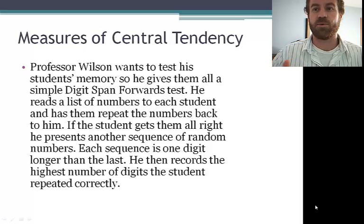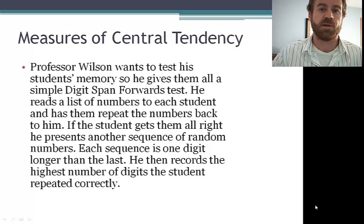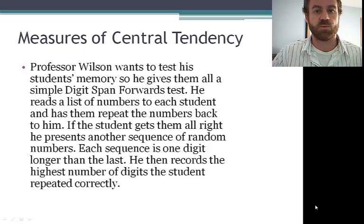So here's an example. In this case, Professor Wilson wants to test his student's memory. So he gives them all a simple digit span forwards test. He reads a list of numbers to each student and has them repeat the numbers back to him. So he might say 319, and then the student repeats back 319. If the student gets them all right, he presents another sequence of random numbers. This time the sequence is one digit longer. So this time he might say 5283, and the student repeats them back.